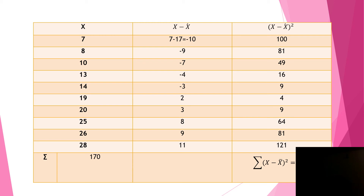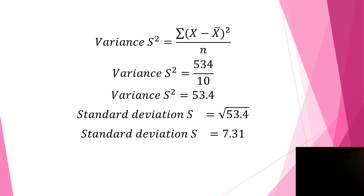Since the formula requires (x minus x̄)², we take the square of all values. Minus 10 squared is 100, minus 9 squared is 81, minus 7 squared is 49, and we continue to the end — there is also 121. We then sum up all the (x minus x̄)² values. When we sum all of them, we get 534.